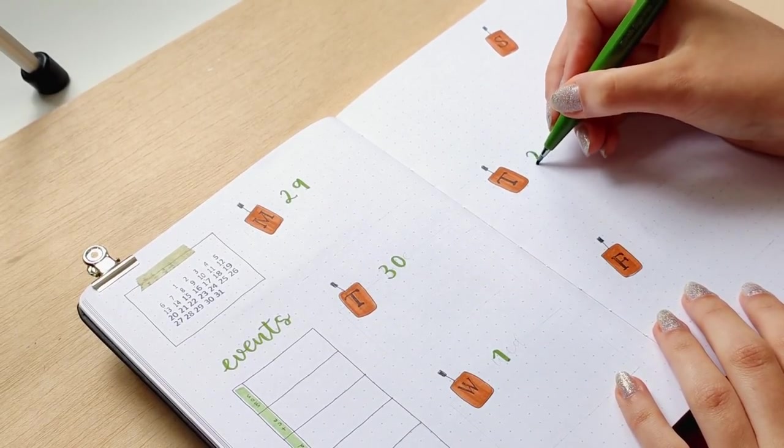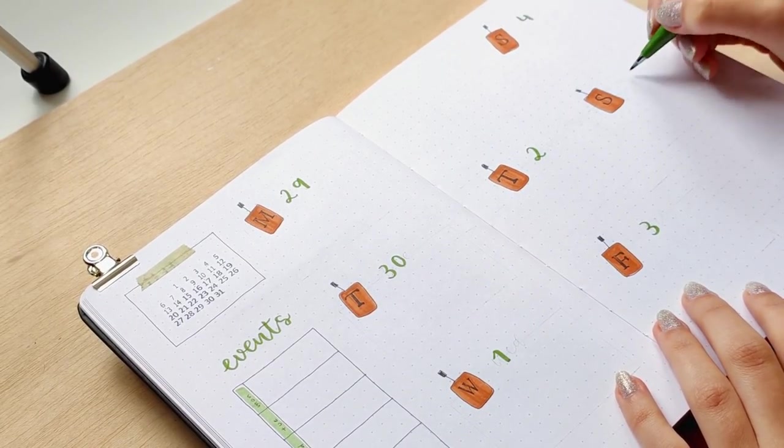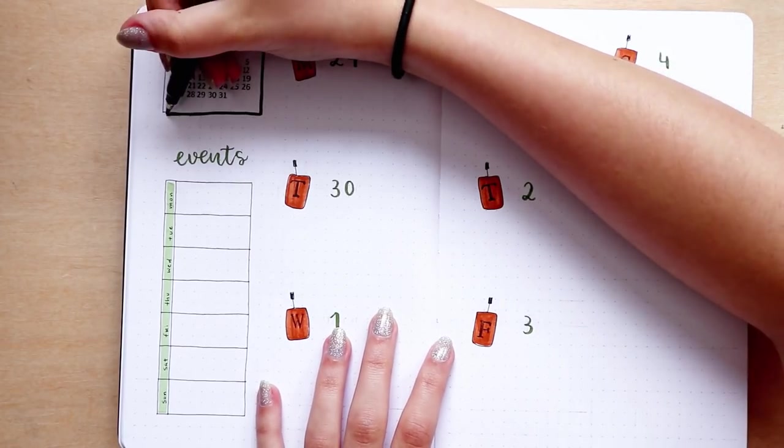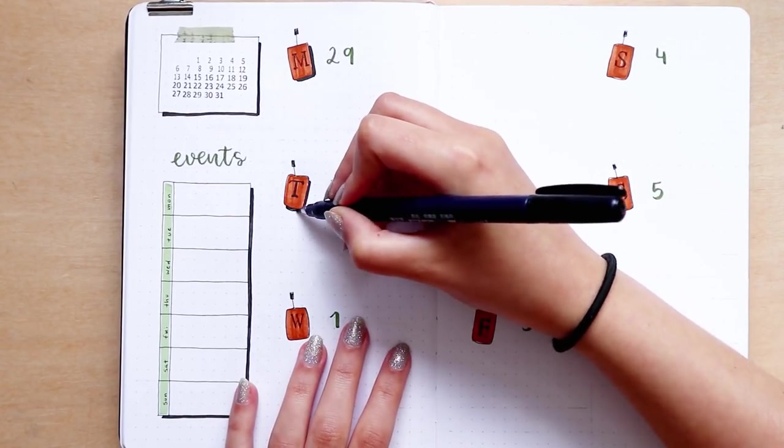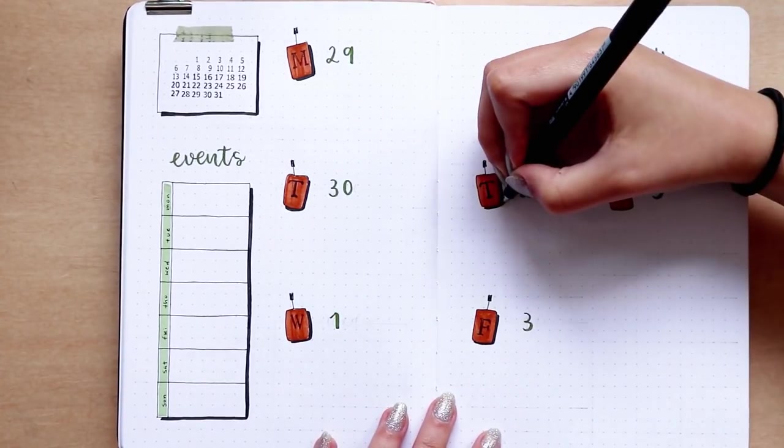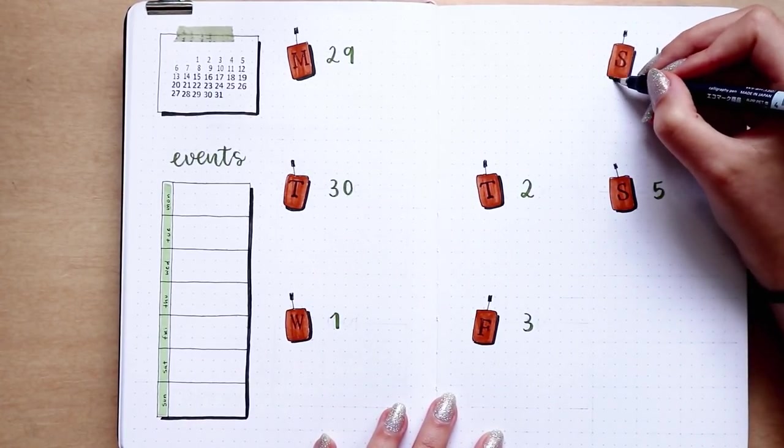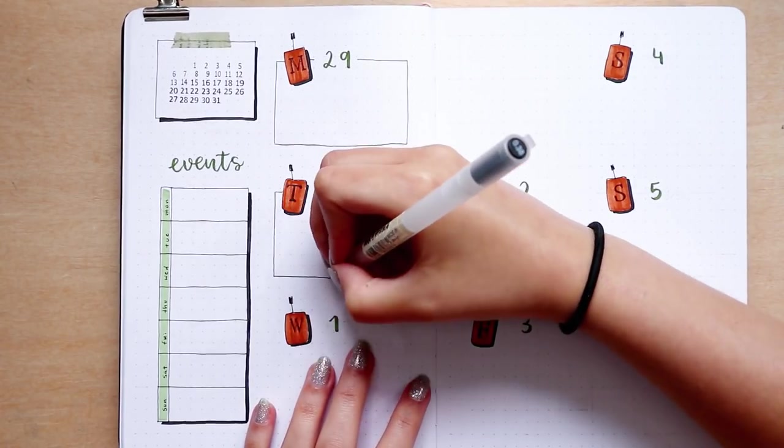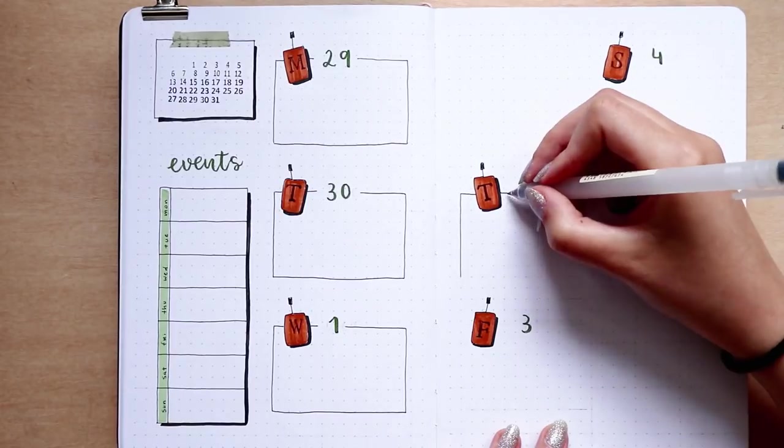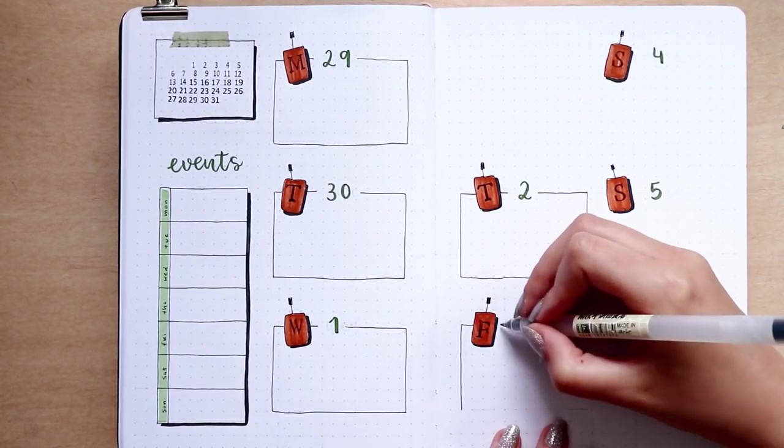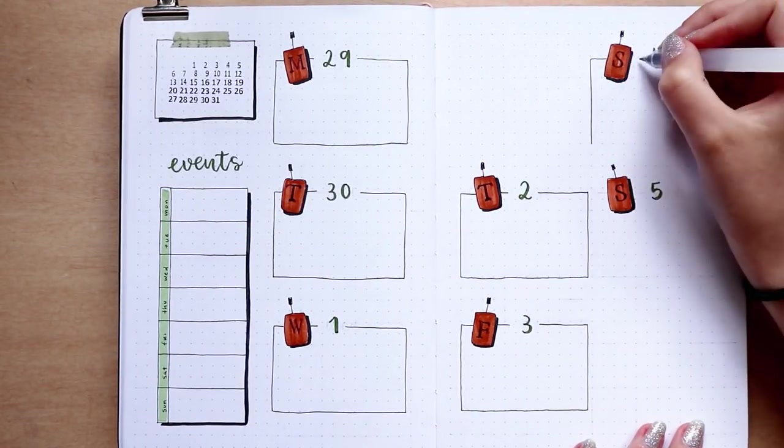For the mini calendar, I used my calendar stamps from before, I did the event section on the side and I highlighted the headers with the zebra mildliner. I did the brown rectangles for the days of the week, which wasn't my idea initially, but now there is no going back, and I ended up writing the numbers for the days on the side using the green Pentel fude touch pen.